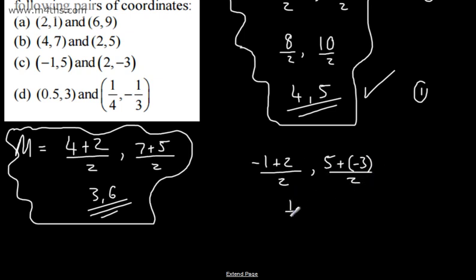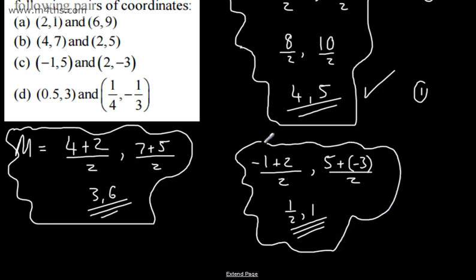That's going to give me 1 half, and then we're going to have 1. So that is the midpoint now of the points, negative 1, 5, and 2, negative 3.